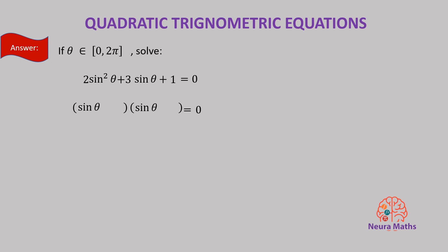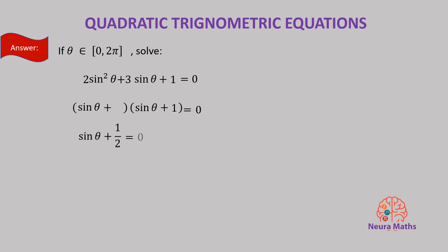These numbers are positive 1 and positive 2. We then divide both by 2, giving us 1 and one-half. Setting each factor equal to 0, we get sine theta equals negative one-half, or sine theta is equal to negative 1.